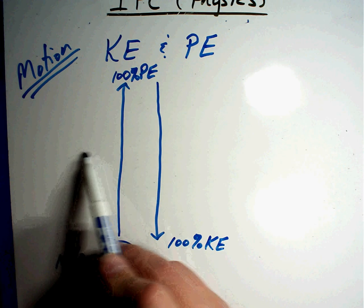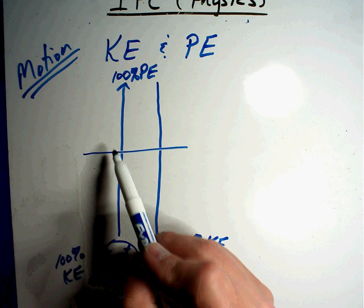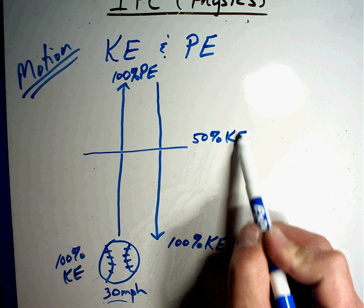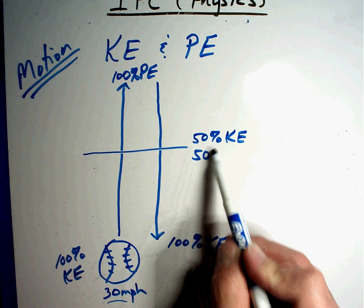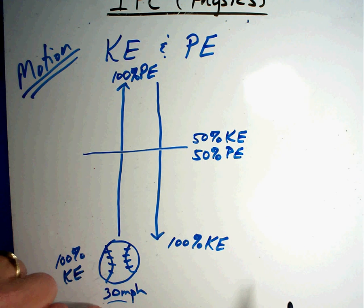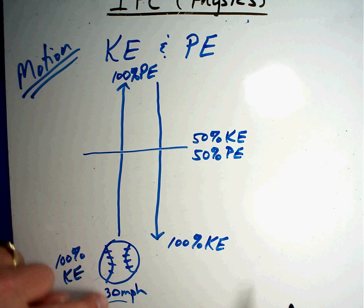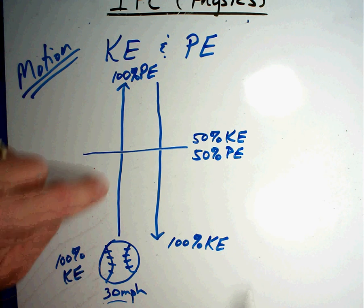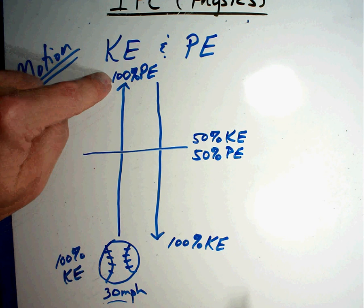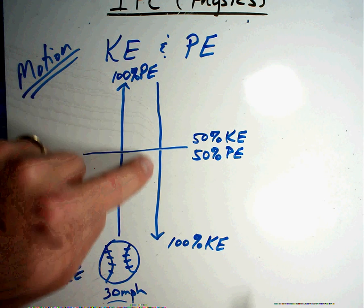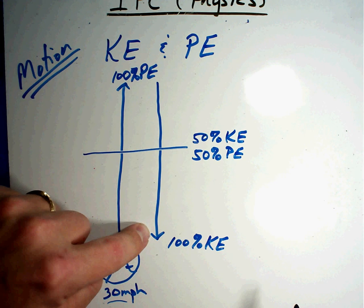What do you think it is in the middle? In the middle, it's going to be 50% kinetic — it's slowing down — and 50% potential energy. As I throw the ball up at 30 miles per hour, as it gets halfway it's slowing down. What's slowing it down? Gravity. Gravity is slowing it down, it stops at the very top, then starts falling again and speeds up until it reaches its fastest speed right as I catch it.